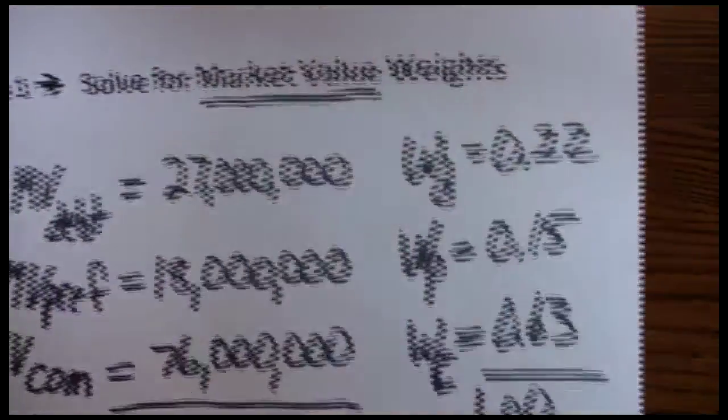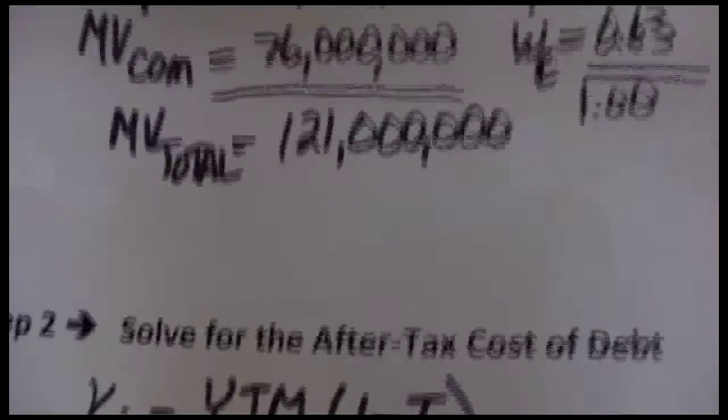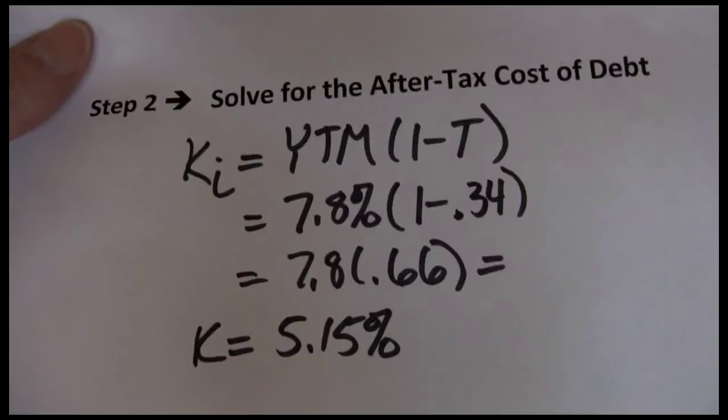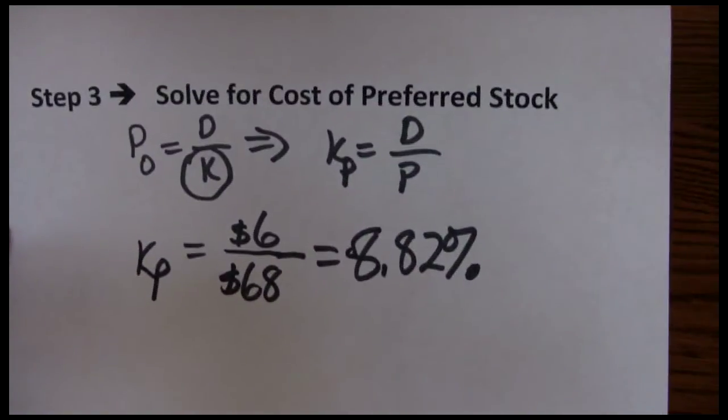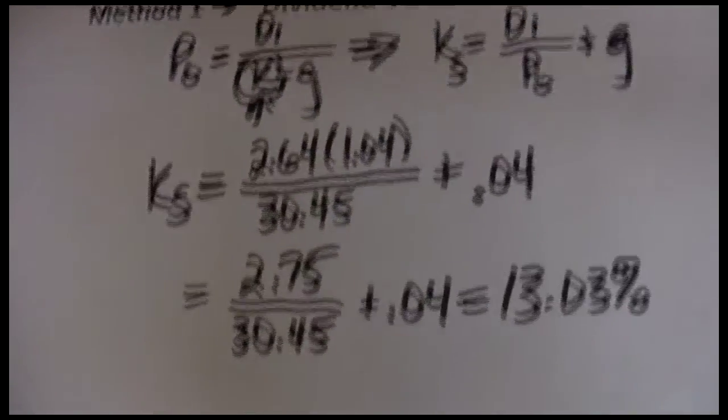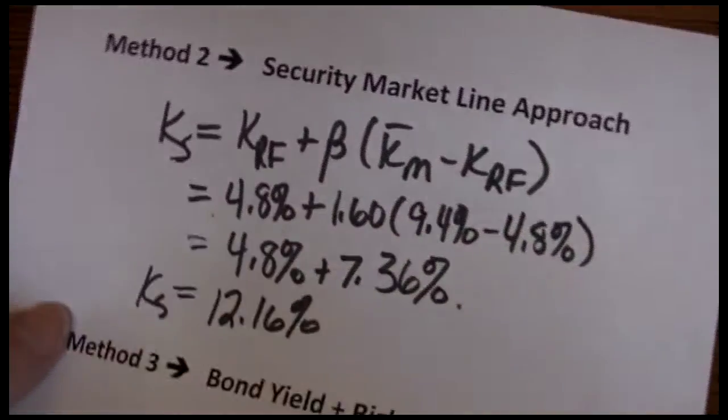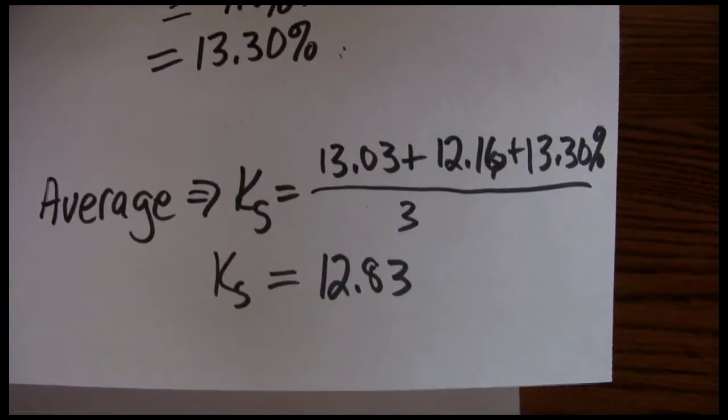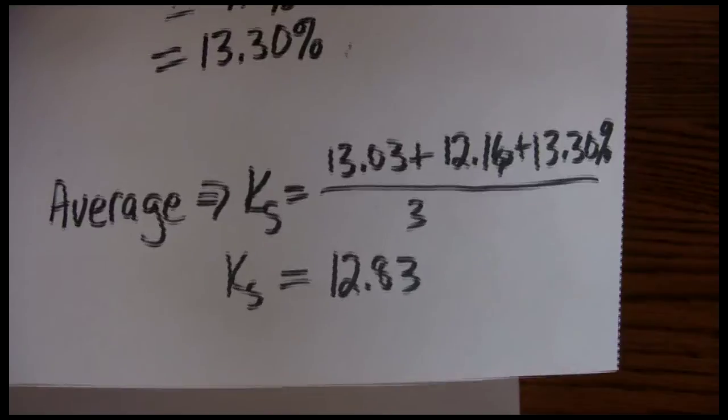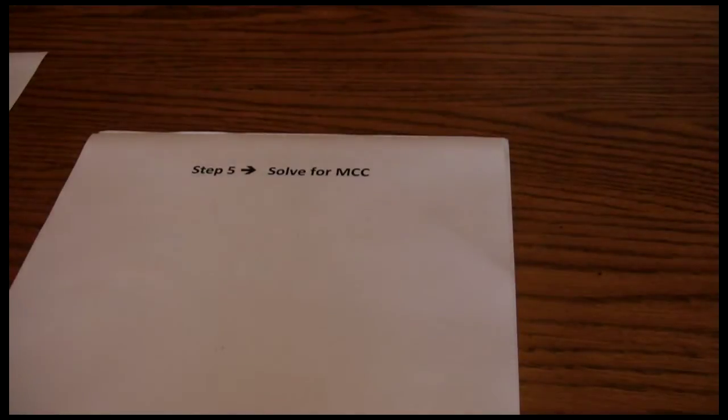We resolved for the market value weights, the after-tax cost of debt, the cost of preferred stock financing, and each of the three methods for the cost of common stock financing and got a total average cost of our common stock financing. Now we're going to put that all together to solve for the marginal cost of capital.